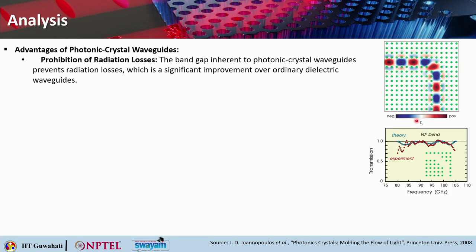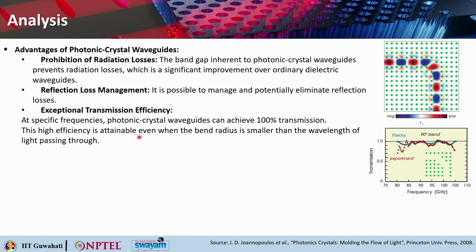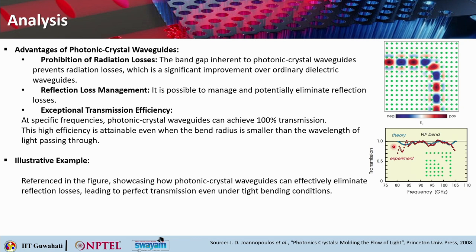Photonic crystal waveguides prohibit radiation loss. The band gap inherent to photonic crystal waveguides prevents radiation loss, a significant improvement over ordinary dielectric waveguides. It is also possible to manage and potentially eliminate reflection losses, giving exceptional transmission efficiency. At specific frequencies, photonic crystal waveguides can achieve 100% transmission, even when the bend radius is smaller than the wavelength of the light. The electric field plot shows that nothing reflects and nothing leaks out, achieving almost 100% transmission even under tight bending conditions.